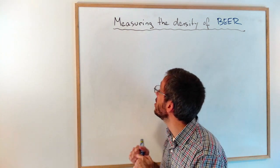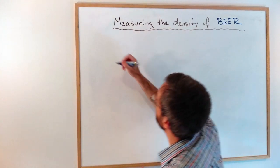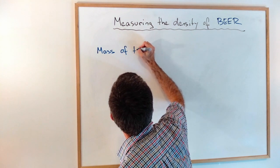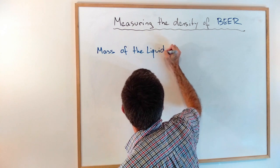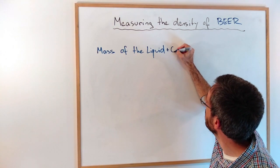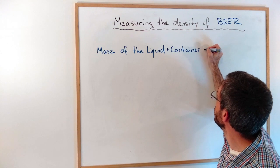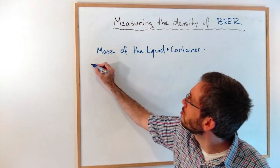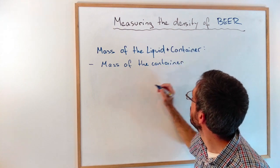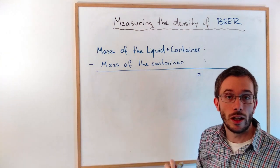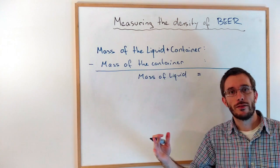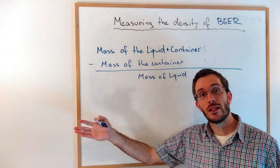First, we need to know the mass of the liquid. Liquids always come with their containers, so we're going to measure the mass with the container and then subtract the mass of the container. That will give us the mass of the liquid. Once I have that, I can calculate density as mass over volume.